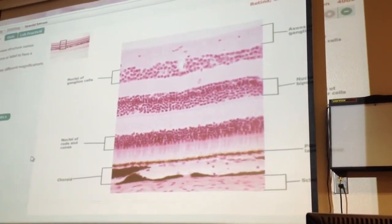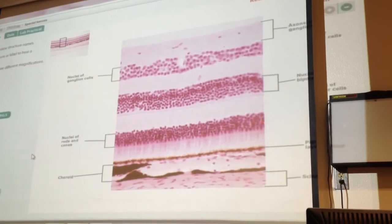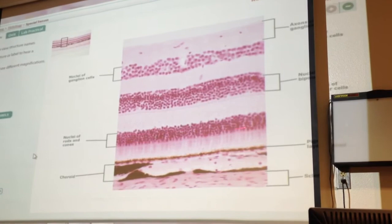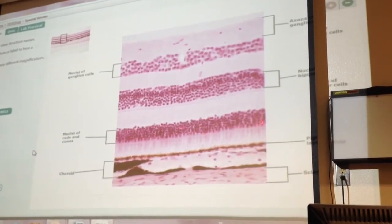So I could ask you to identify, okay, what are these cells here? And you just say rods and cones. And photoreceptor cells would also be acceptable, but rods and cones is more specific.